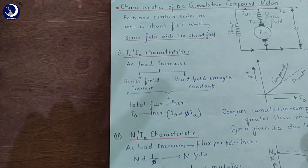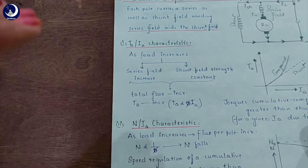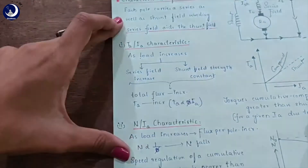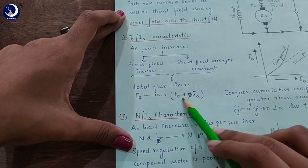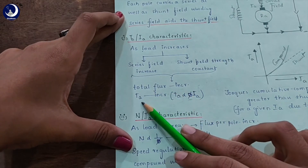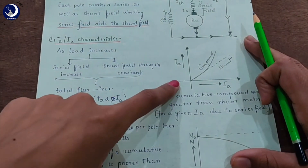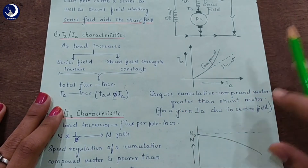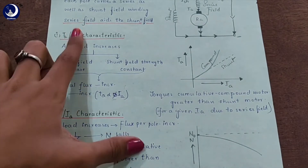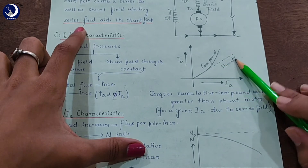As the load increases, two things happen: first, the series field increases, and secondly, the shunt field strength remains constant. As a consequence, the total flux increases. Since TA is directly proportional to phi times Ia, as phi is increasing, TA also increases. This is the curve for TA vs Ia characteristic. For a given armature current Ia, due to the series field, the cumulative compound motor has greater torque when compared to the shunt motor.